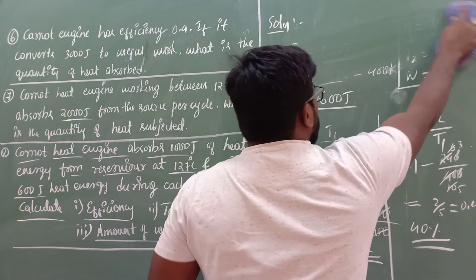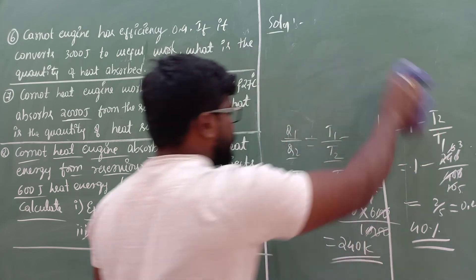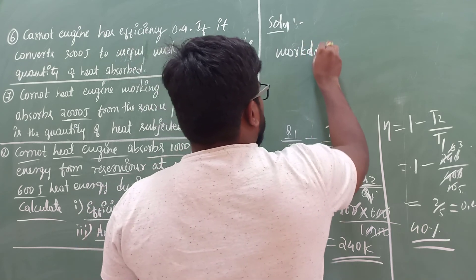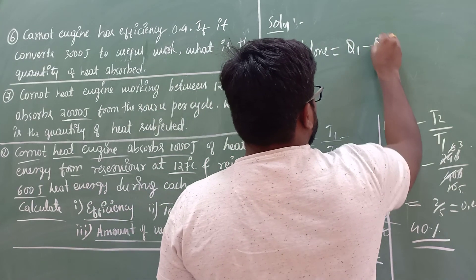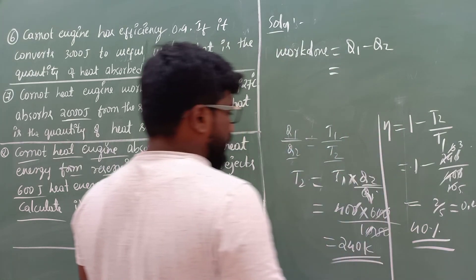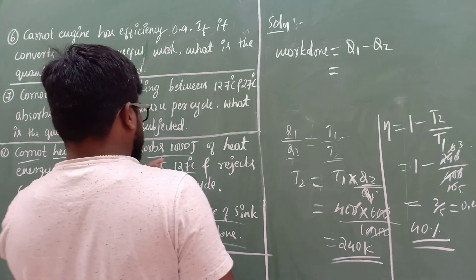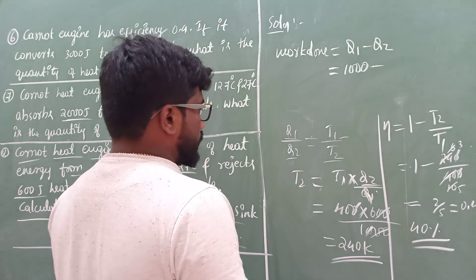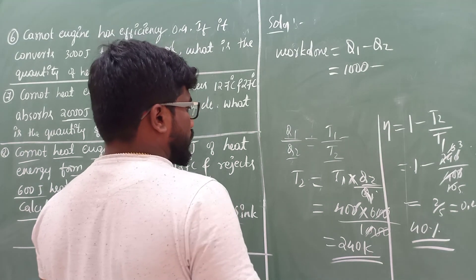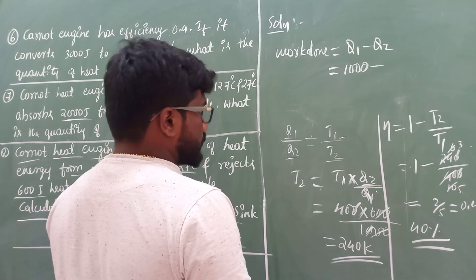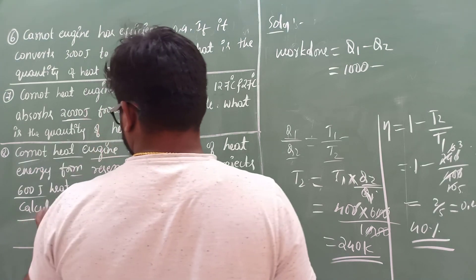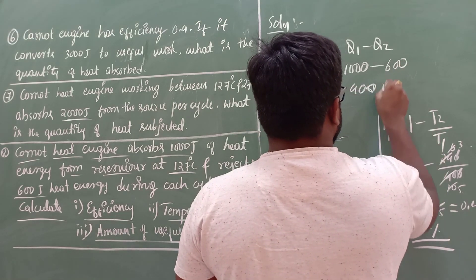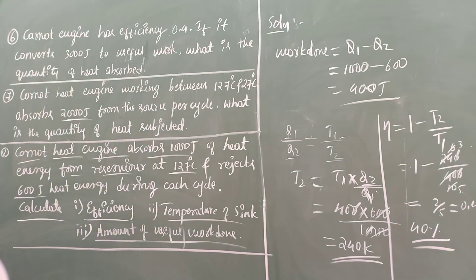Finally, the amount of work done is given by W equals Q1 minus Q2. Substituting: Q1 is 1000 Joules minus Q2 which is 600 Joules, giving W equals 400 Joules. That is the amount of work done by the Carnot engine.